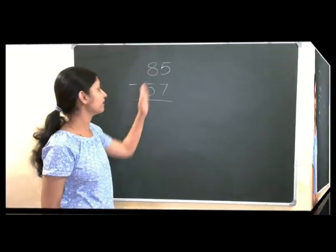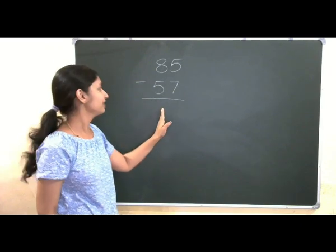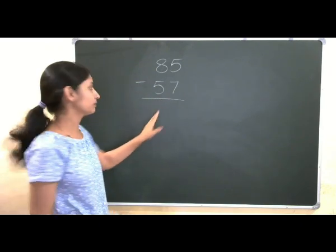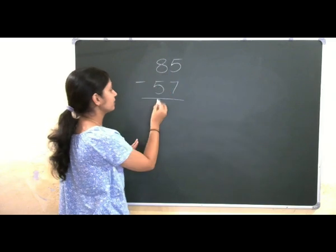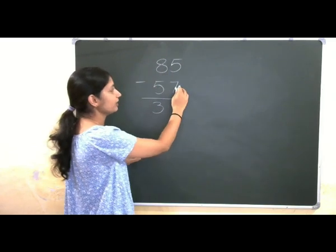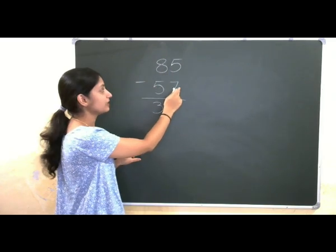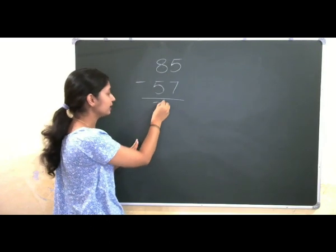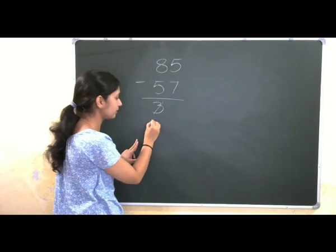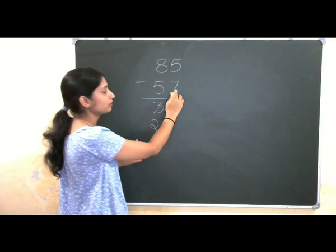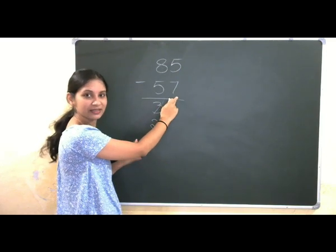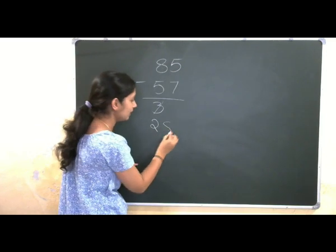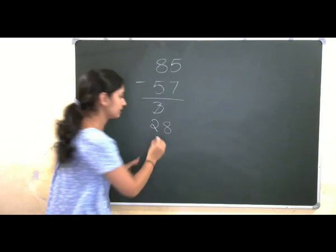Let us go for 85 minus 57 now. So, using base complement method, we do 8 minus 5 is 3. But here, yes, you are getting 7 is more than 5. So, I need to deduct 1 from this number. That is 2. Now, complement for 7 is? Yes, it is 3. 3 plus 5 gives me 8. It is 28. So, the answer is 28.